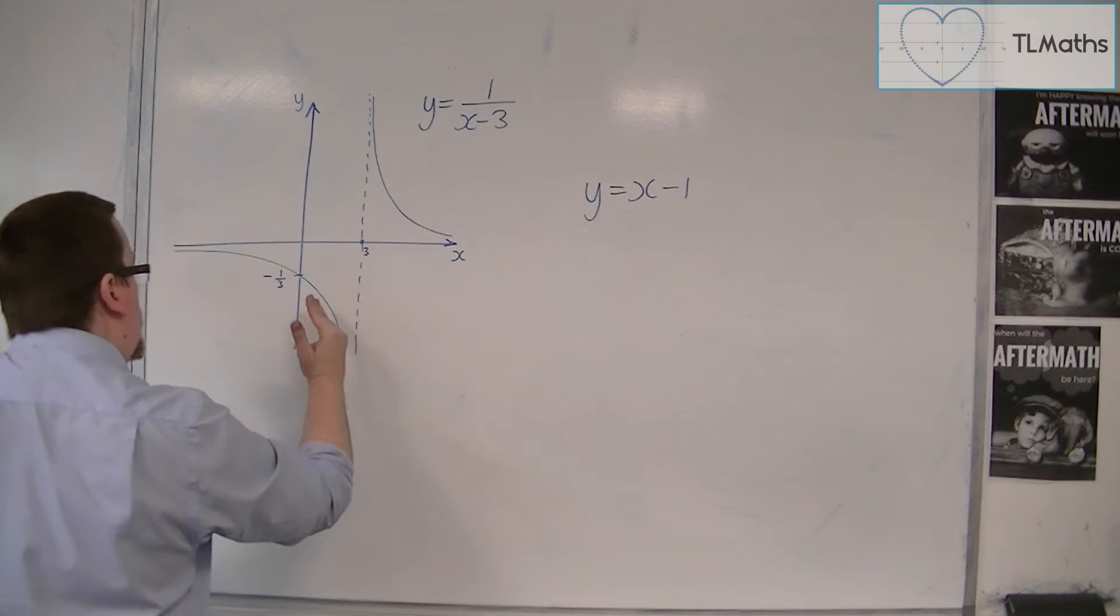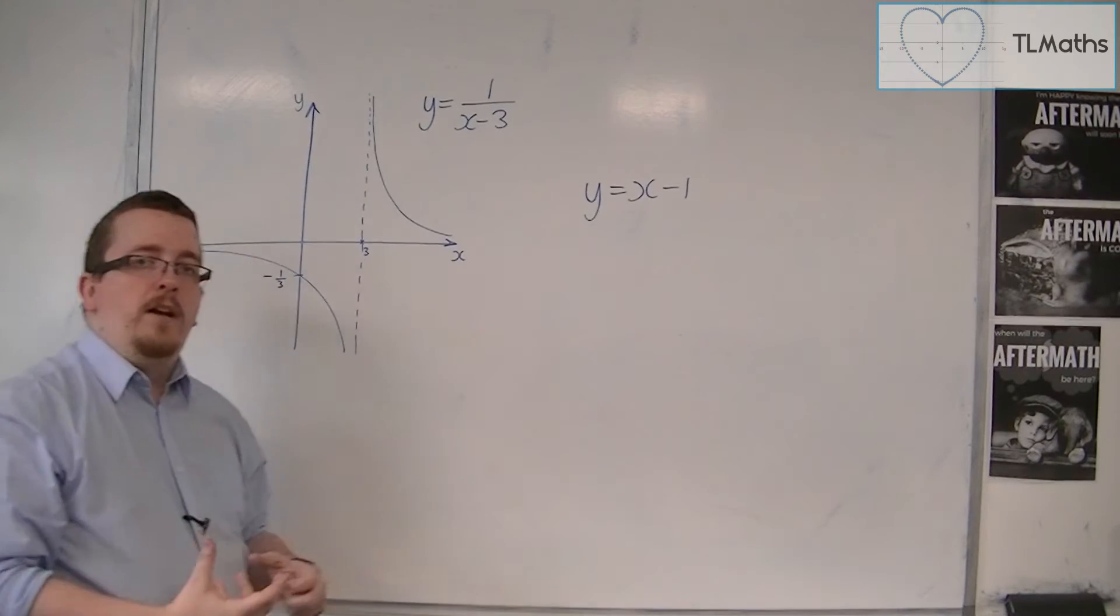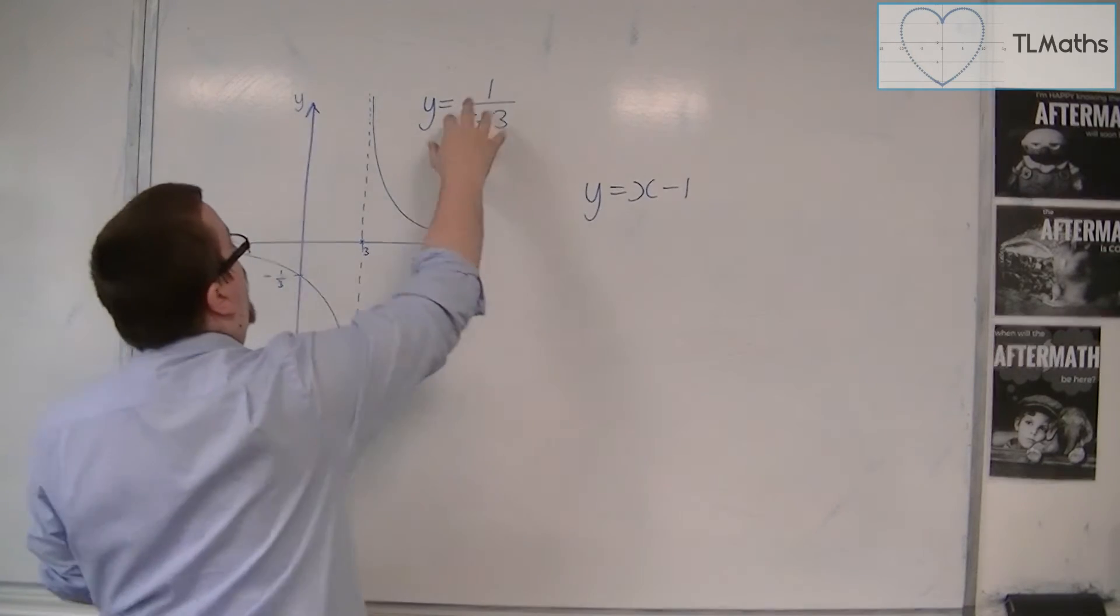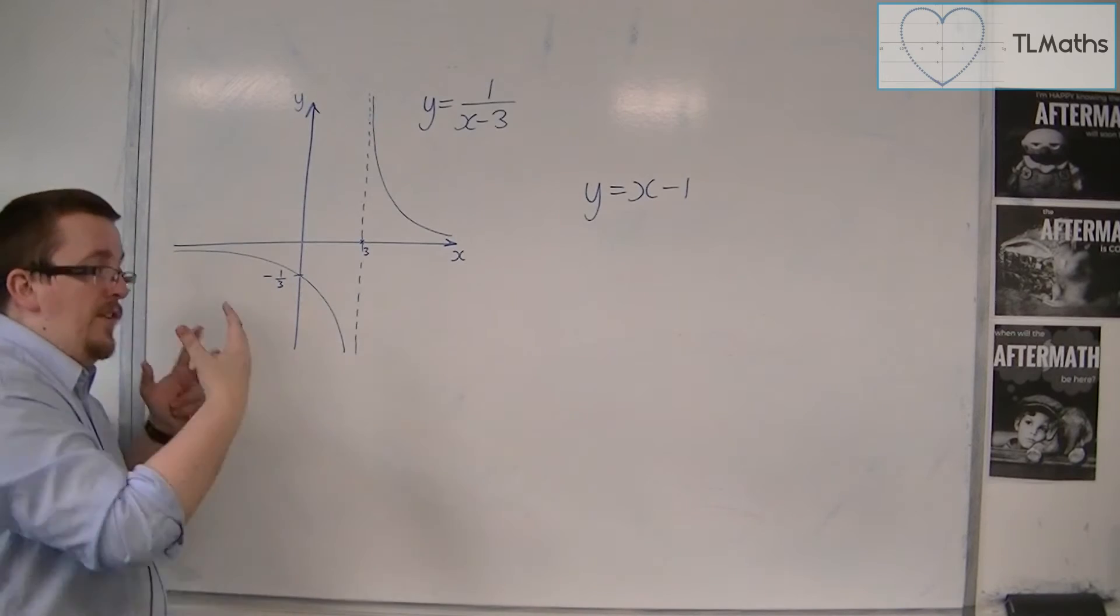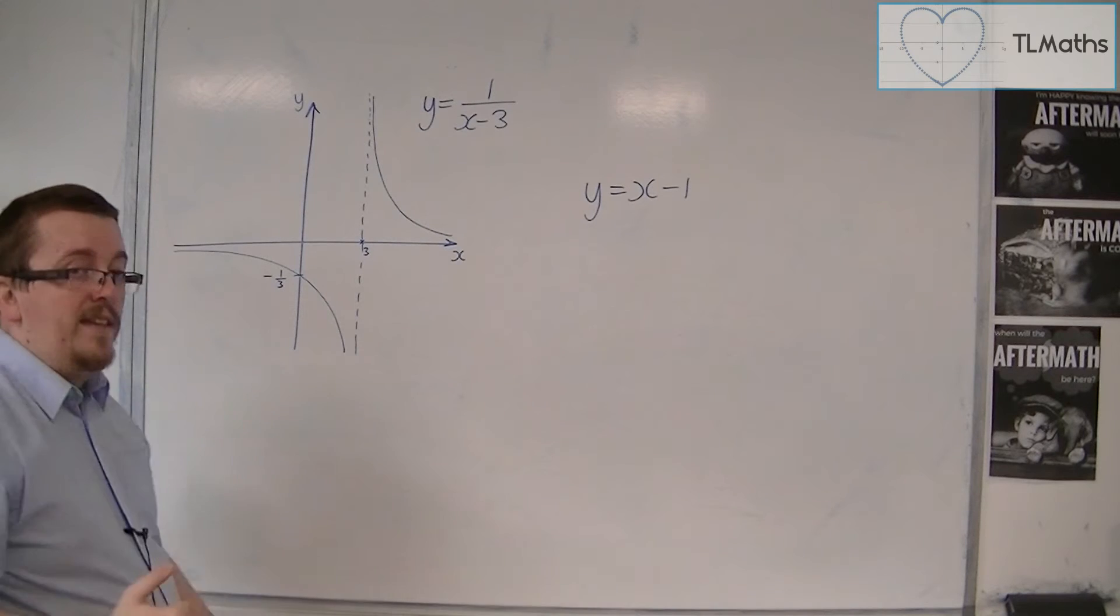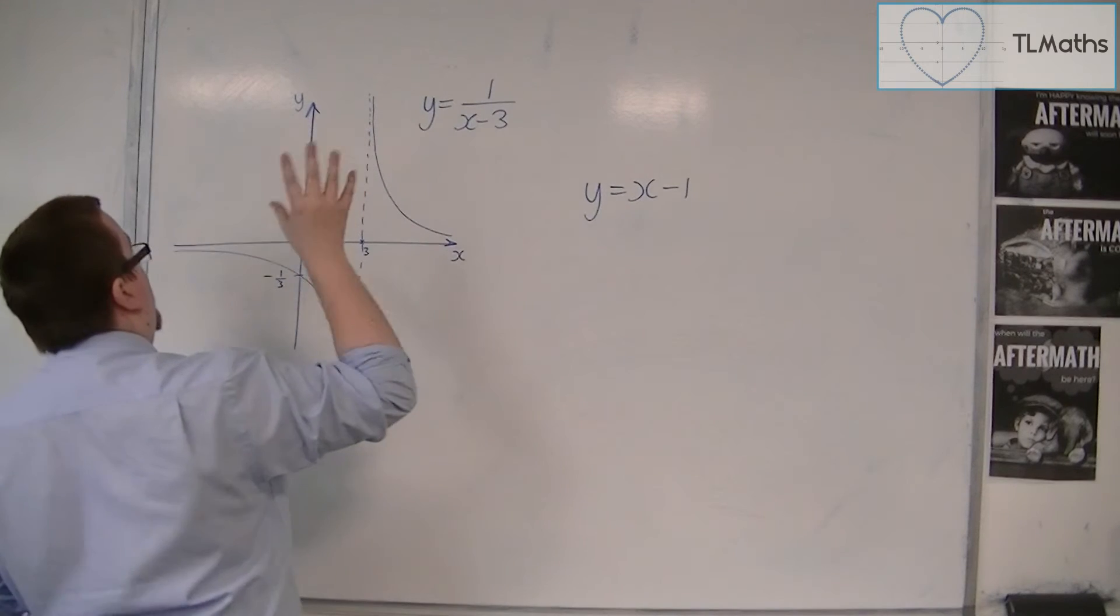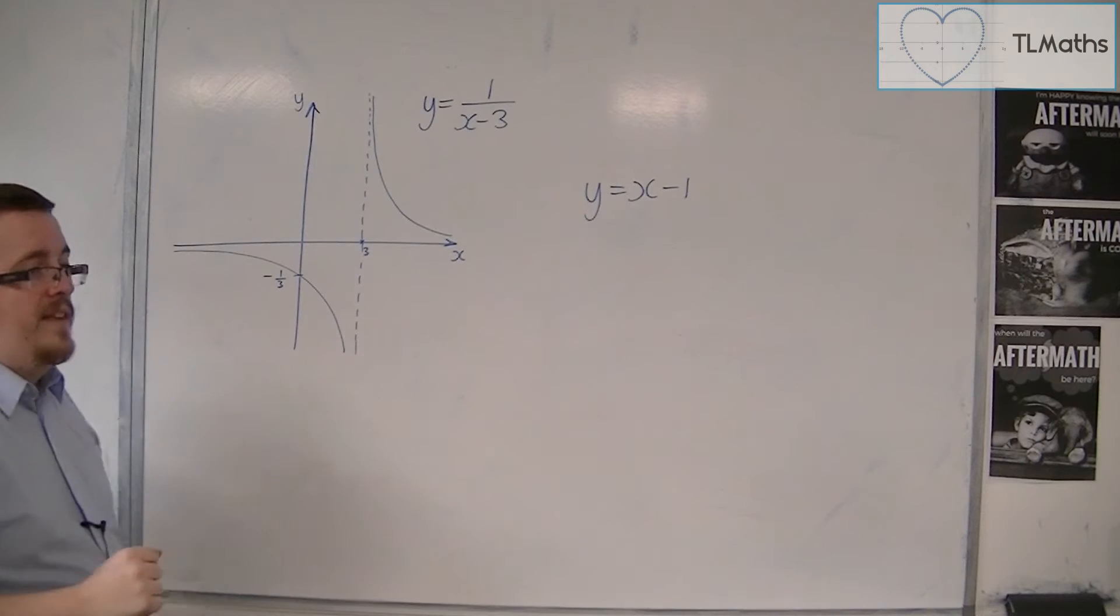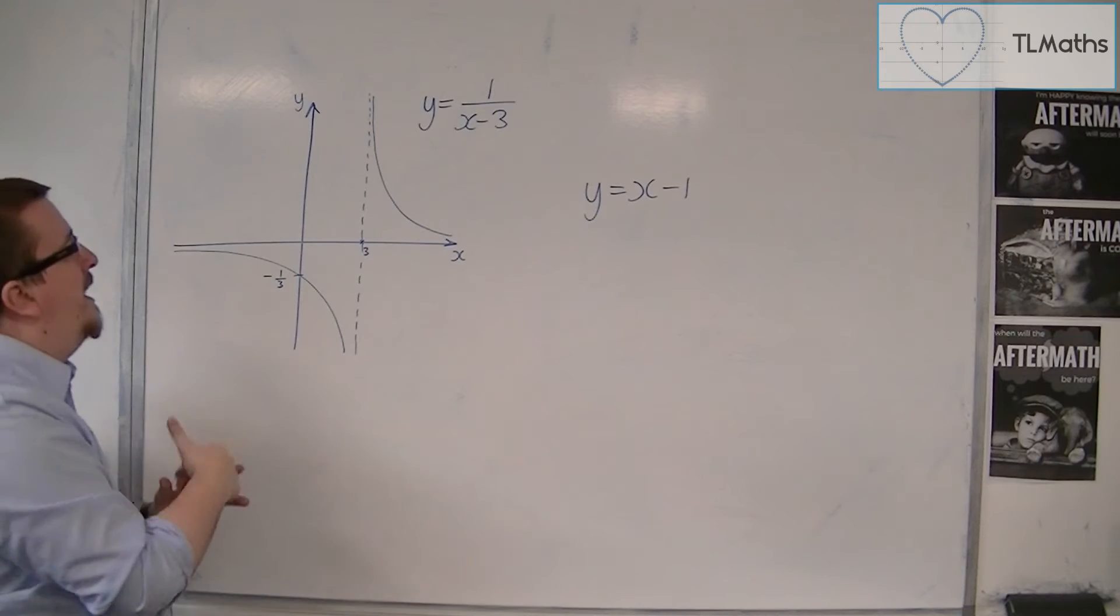And likewise, it's approaching the x-axis in this direction as well, because as x gets larger and negative. So when x is minus 1,000, we have 1 over minus 1,003, which is negative and very small. And as x continues on its way to the left, it gets larger and more negative, and this gets smaller and smaller. And so it gets closer and closer to the x-axis. So this is the shape that this graph would have.